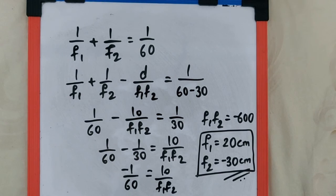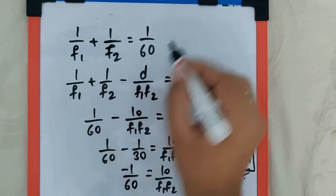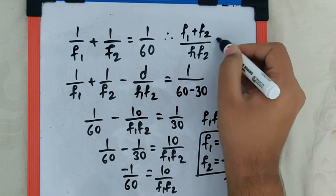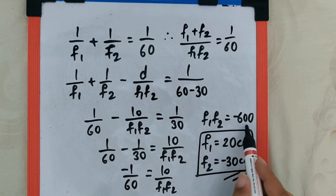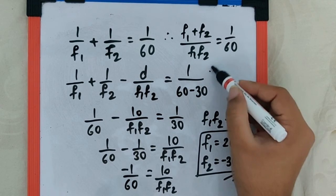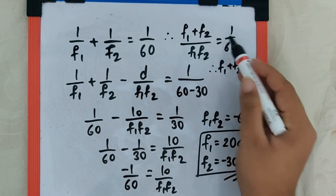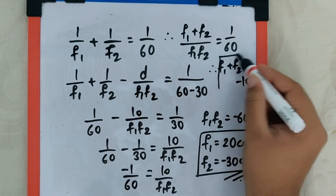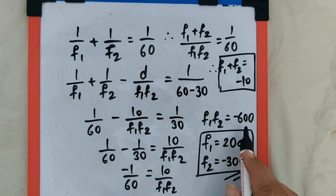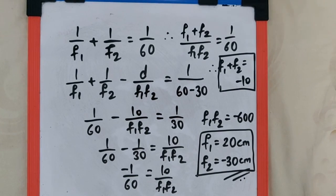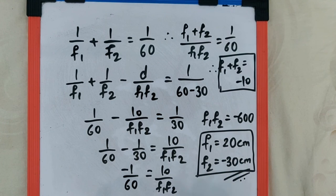If we want to solve algebraically, we simplify the first equation as (f1 + f2)/(f1·f2) = 1/60. Since f1·f2 = −600, substituting gives f1 + f2 = 60 × (−10) = −10. So we have f1·f2 = −600 and f1 + f2 = −10. Solving these two equations simultaneously gives the same answer: f1 = 20 and f2 = −30.